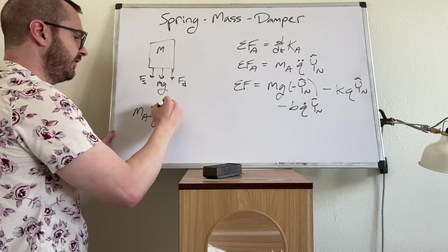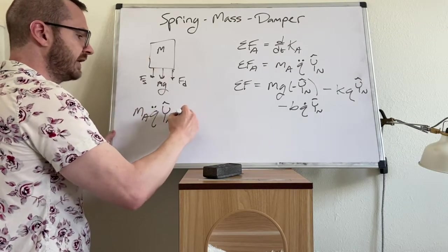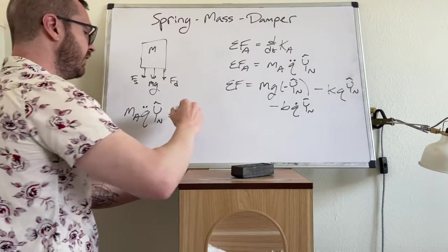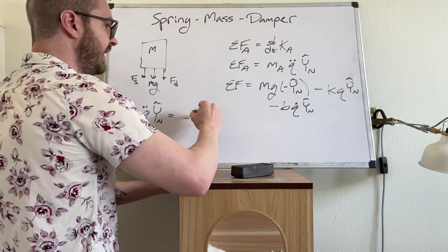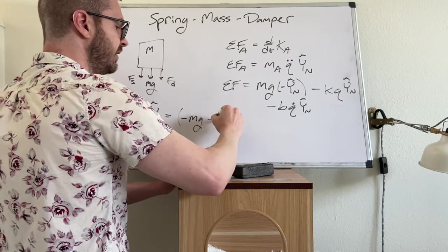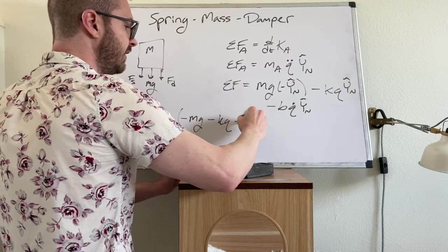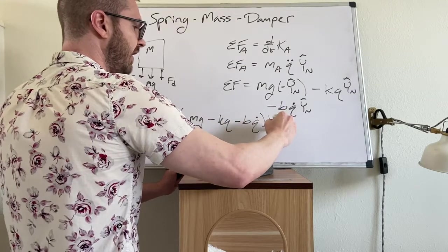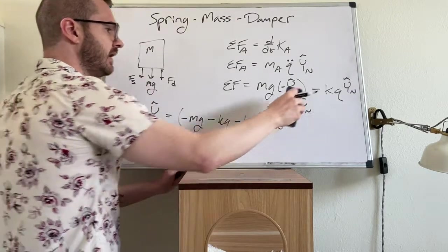So I'm going to say that M A Q double dot in the Y hat N direction. This is equal to, and I'm just going to bring my sum of forces over. This is negative M G negative K Q negative B Q dot. And that is all in the Y hat N direction.